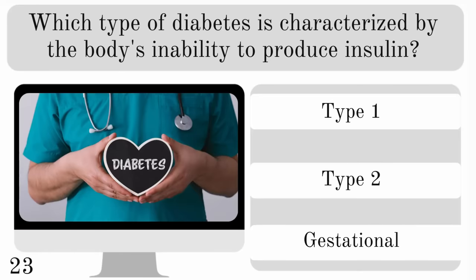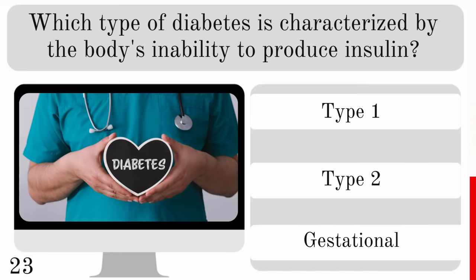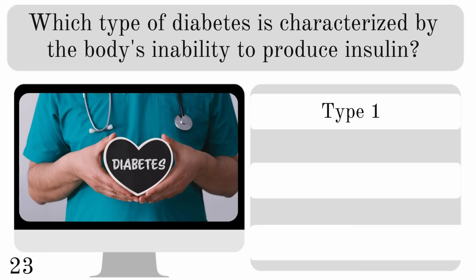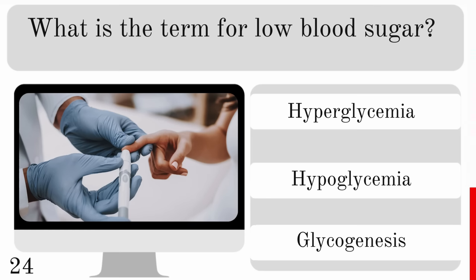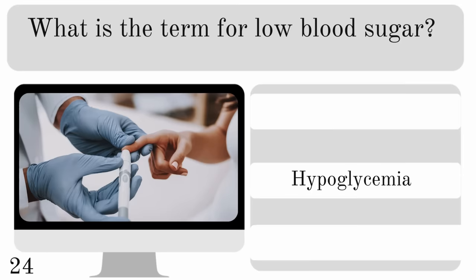Which type of diabetes is characterised by the body's inability to produce insulin — type 1, type 2 or gestational? The answer is type 1. So what is the term for low blood sugar? Is it hyperglycemia, hypoglycemia or glycogenesis? The correct answer is hypoglycemia.